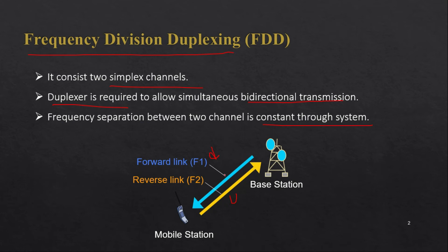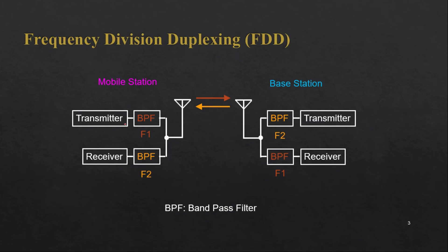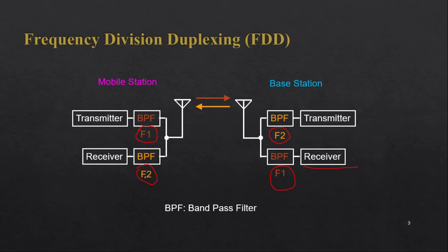To understand FDD better, consider this diagram. The transmitter has a band pass filter and uses frequency F1 for transmission — the mobile station transmits information at F1. When the base station receives that signal, it uses a band pass filter for F1 and receives it. Simultaneously, if the base station wants to transmit something, it uses a different frequency F2. It transmits to the mobile station, which uses a band pass filter for F2 and receives the signal. In this way, both the mobile station and base station can transmit and receive simultaneously at different frequencies.